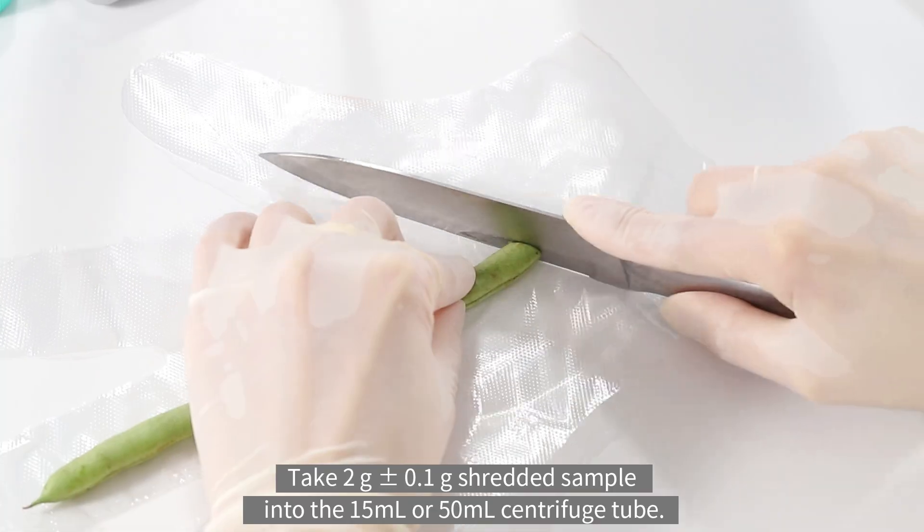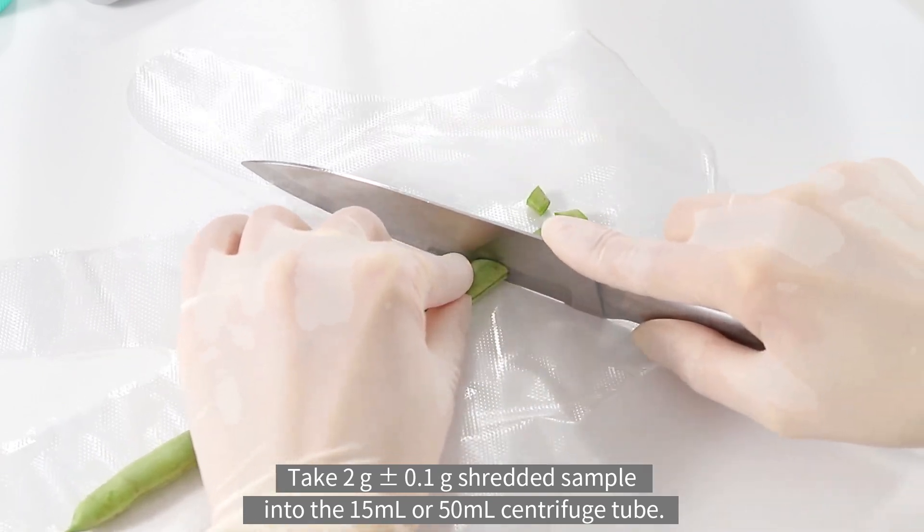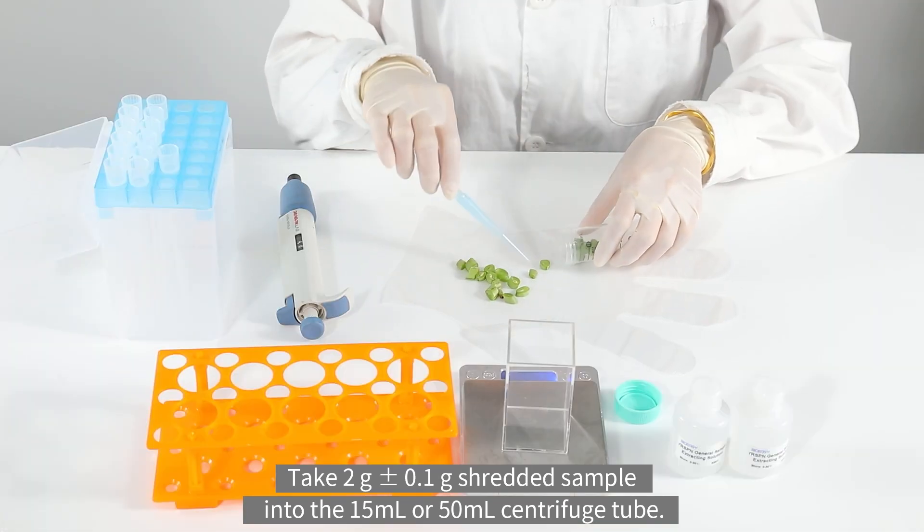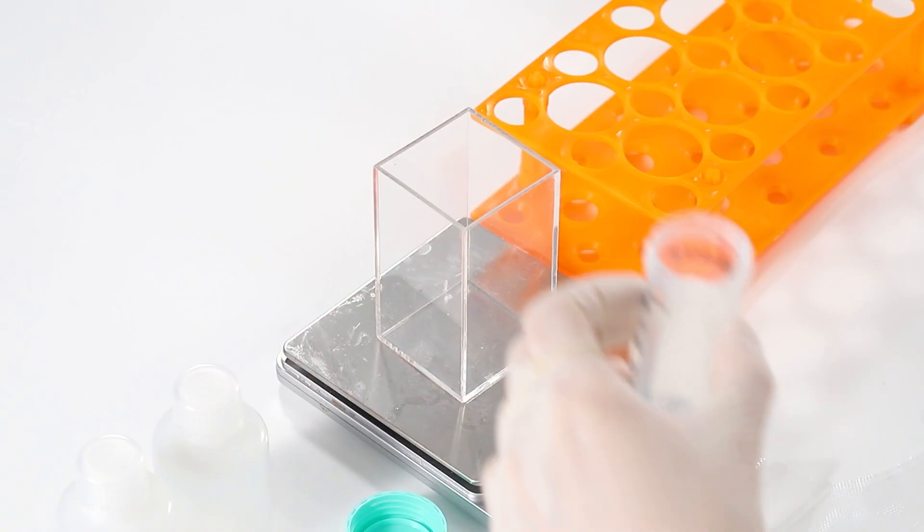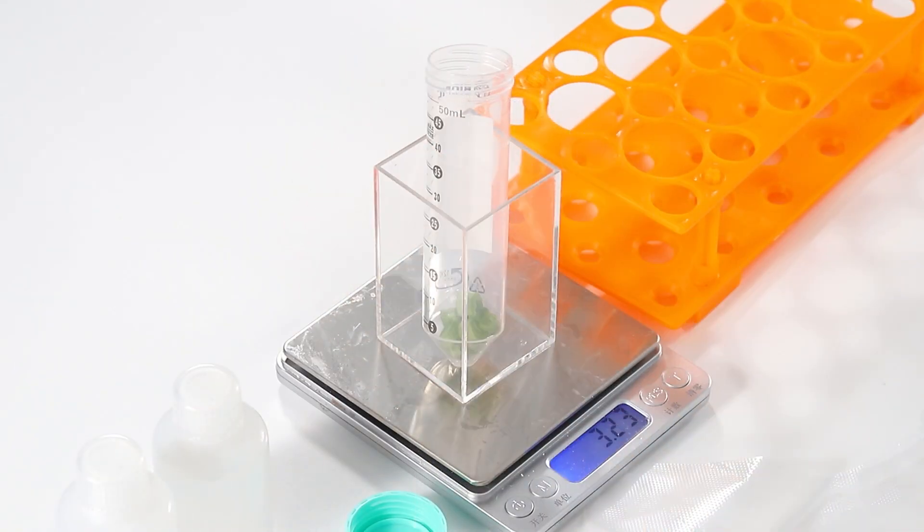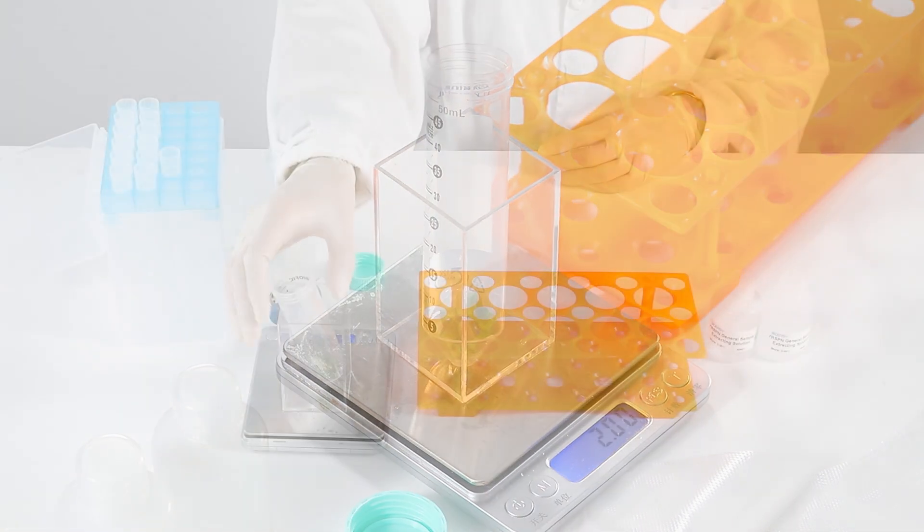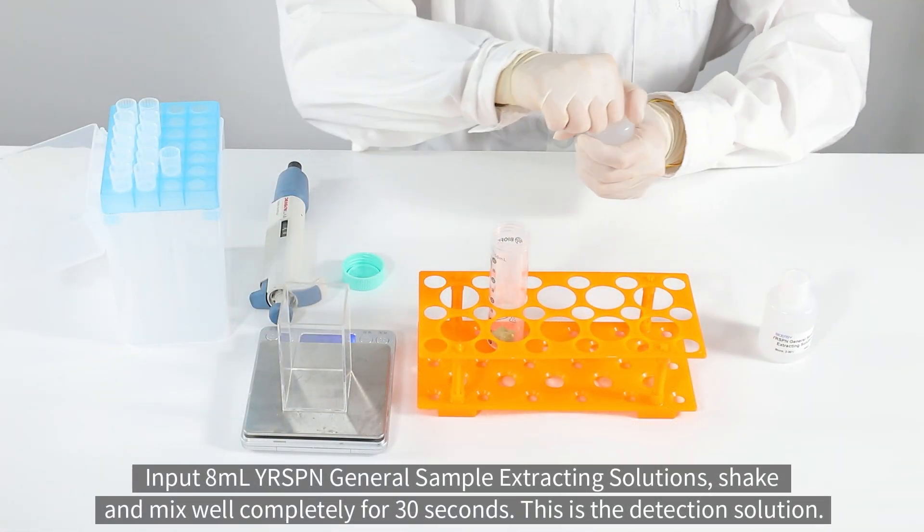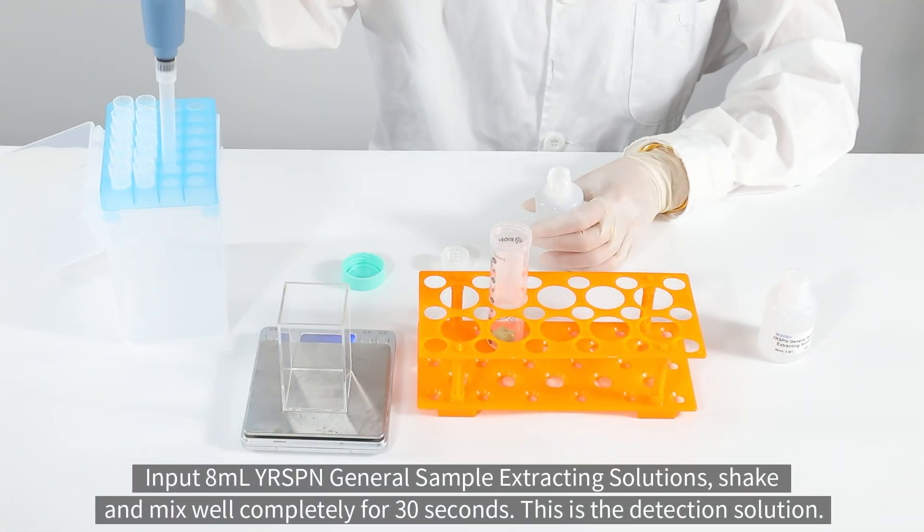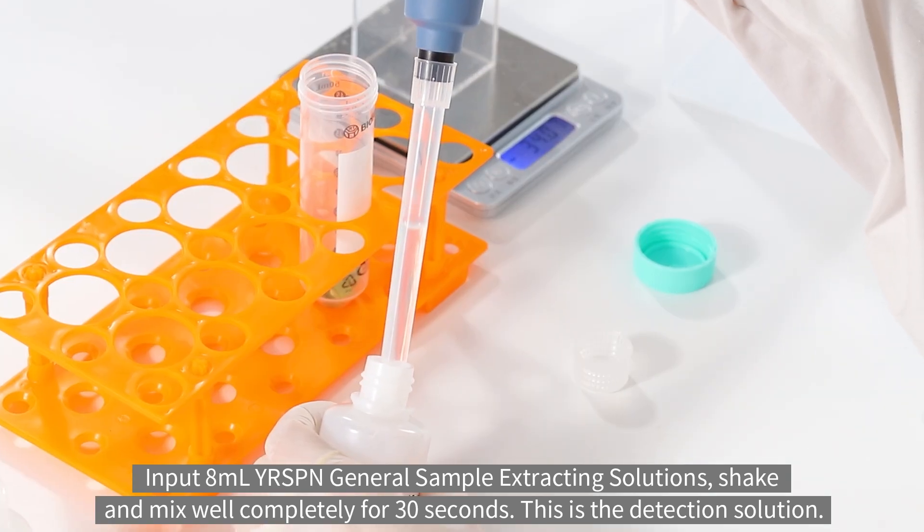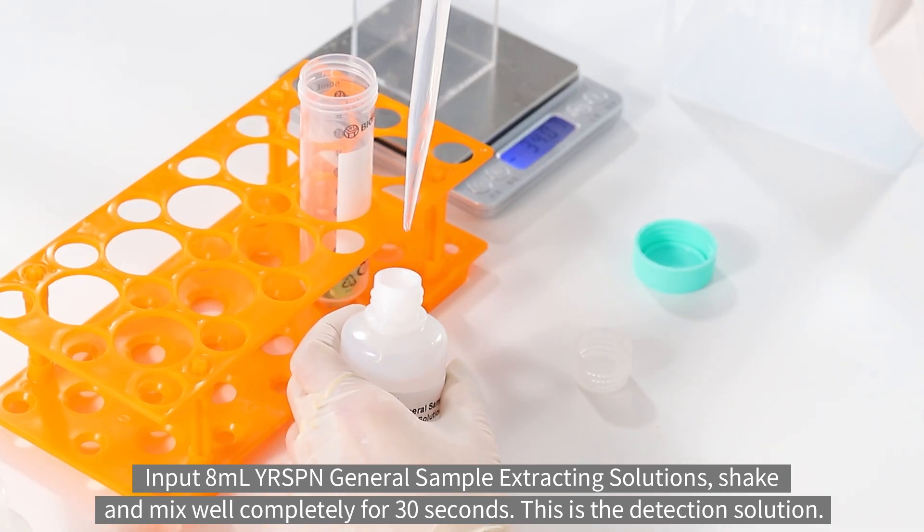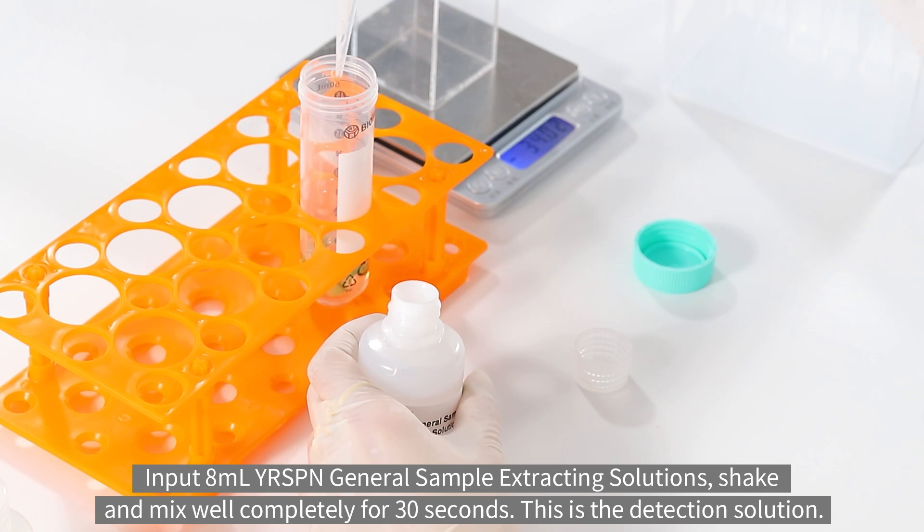Take 2g shredded sample into the 15ml or 50ml centrifuge tube. Import 8ml YRSPN general sample extracting solutions, shake and mix well completely for 30 seconds. This is the detection solution.